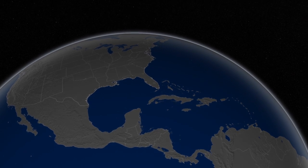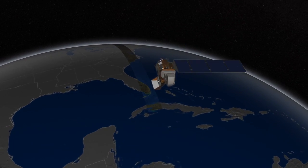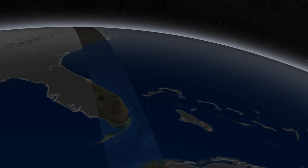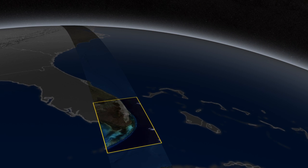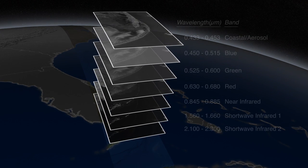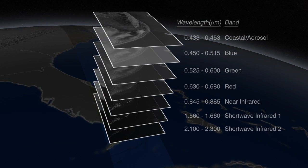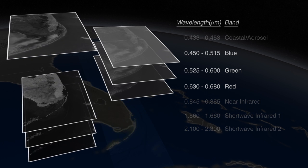When we investigate land cover using the instruments aboard Landsat satellites, we collect sets of data for different wavelengths. Some are in the infrared, and others correspond to blue, green, and red visible light.